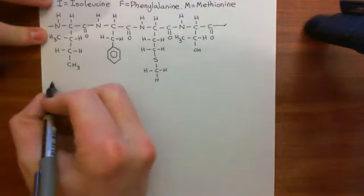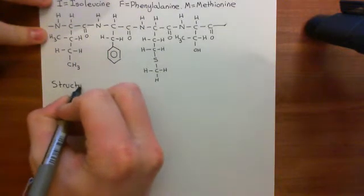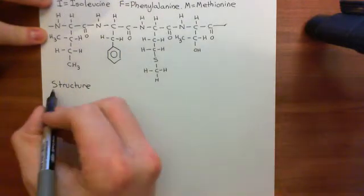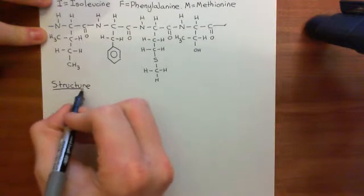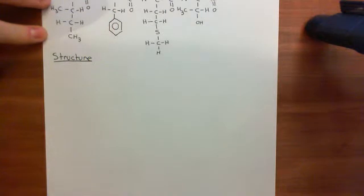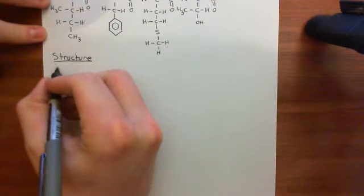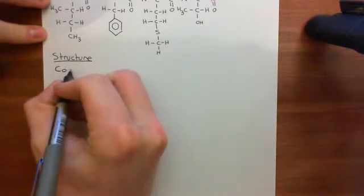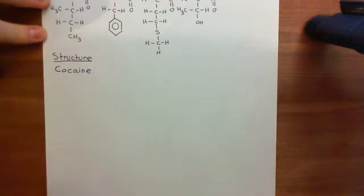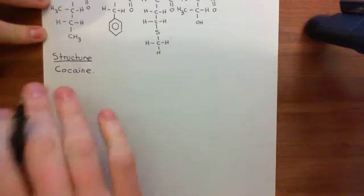We're going to start off by looking at the structure of a local anesthetic and we'll see two examples, and we'll see the general principles that all local anesthetics actually abide by and we'll discuss the relevance of this for their breakdown within the body. We're going to start off with the first ever local anesthetic which is actually cocaine, and in fact all the other local anesthetics came from cocaine - they're modified versions of cocaine.